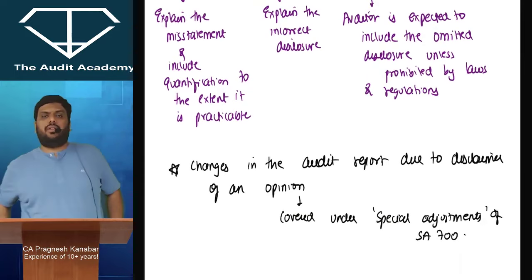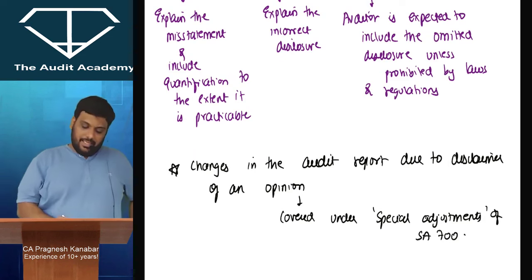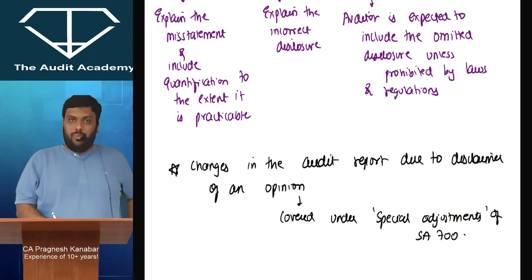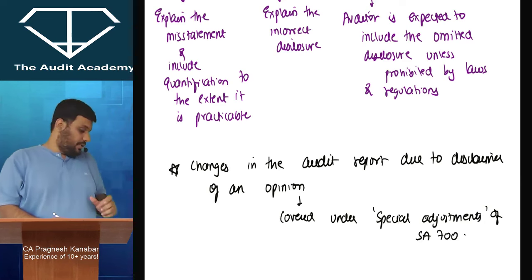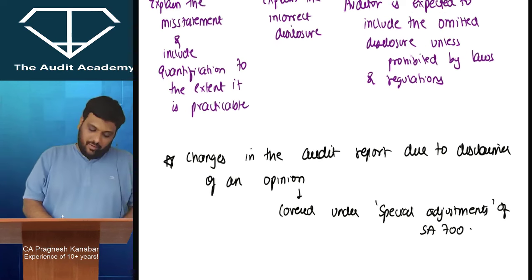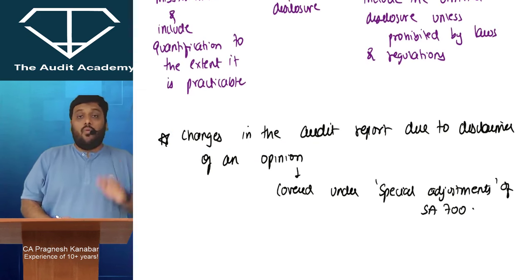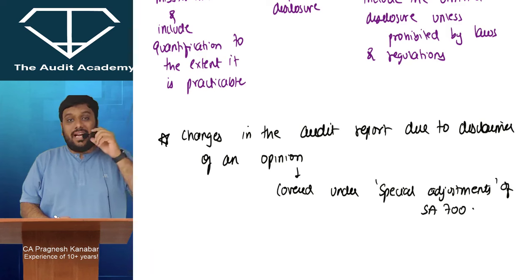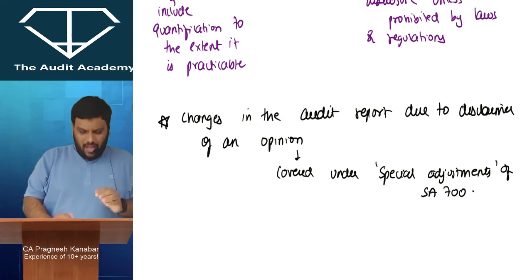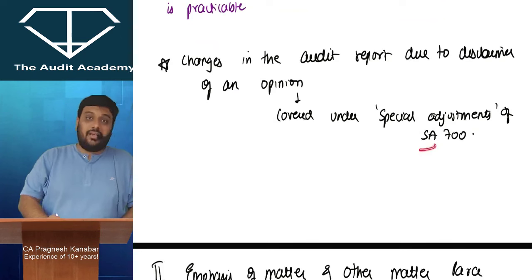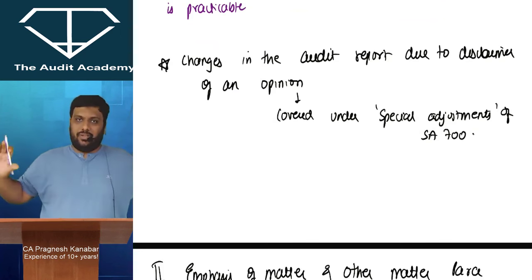What else is in SA 705? When you give a disclaimer of opinion, that is a very sensitive situation and there are some changes in the audit report format. Those changes will be covered under SA 700 in my notes on special adjustments. So relax — that will come later.